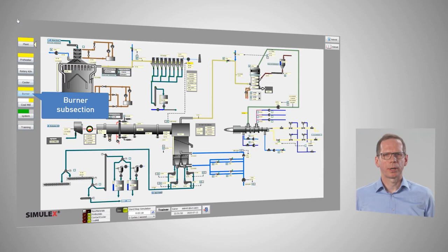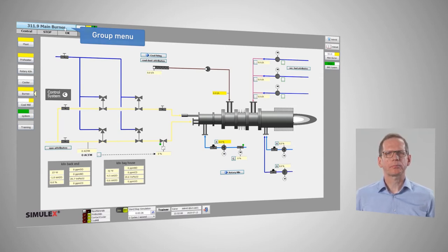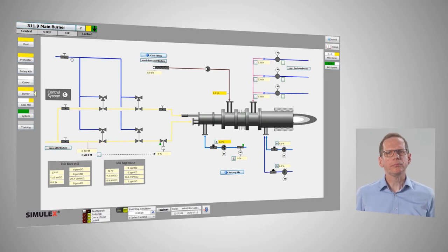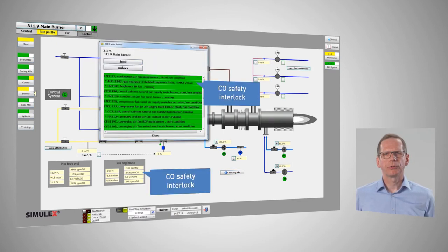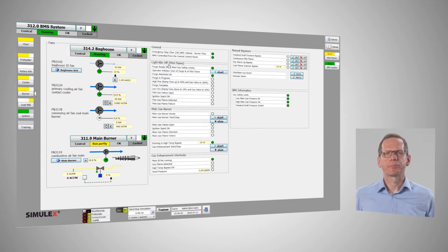Let us now look at startup sequences. All major equipment of a plant can be simulated, including startup sequences or process interlocks. You can start equipment in the same order as you would do in a real plant environment. As an example for incorporated sequences, the burner safety interlock due to high CO measurement in the exit gas can be mentioned. Moreover, we recently also implemented a complete burner management system in a client project. This allows the startup of a burner including all steps from purging to ramping and ignition. Related interlocks like flame detection are also available.